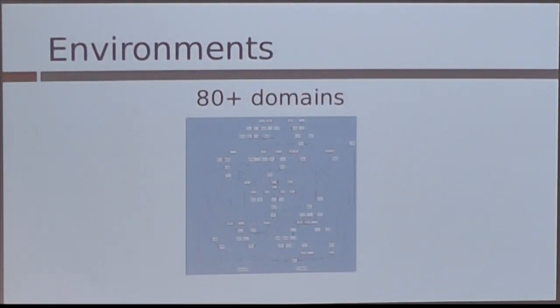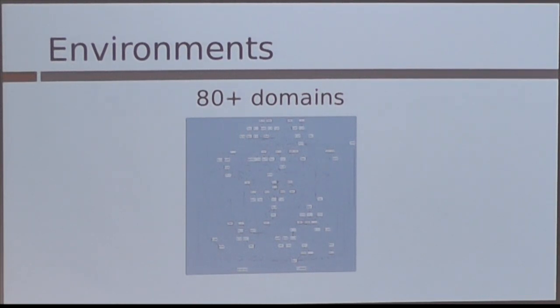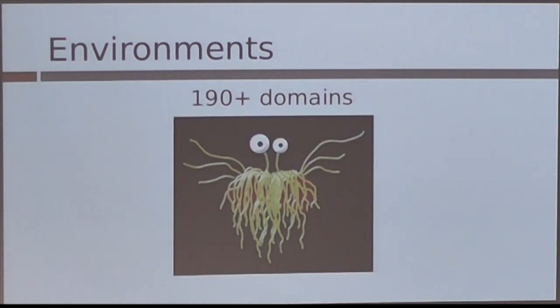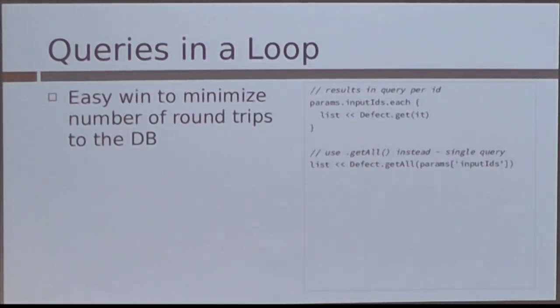Speaking briefly — I said I used it in a couple of real-world applications. When I submitted the proposal for this talk, I noted it's a real-world application with an 80-domain E-Plus domain model. This is output from the class diagram plugin, which if you're not familiar with I would highly recommend — it lets you turn your domain relationships into a graph. This is an 80-domain model, and it's essentially impossible to get it to show in any reasonable fashion on a slide.